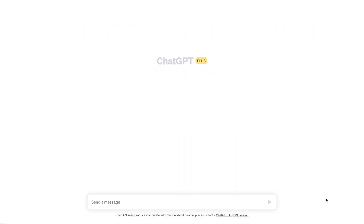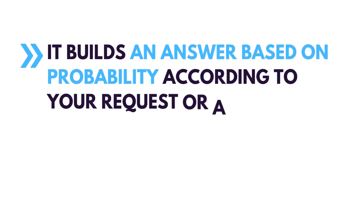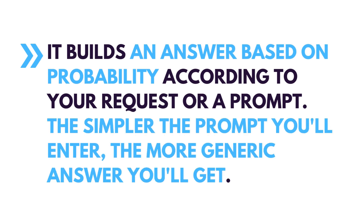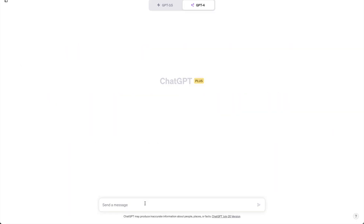In a nutshell, ChatGPT is a probability system. It builds an answer based on probability according to your request or prompt. The simpler the prompt you enter, the more generic an answer you will get.